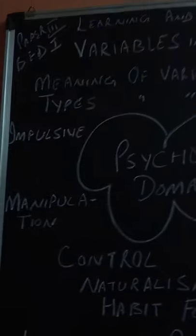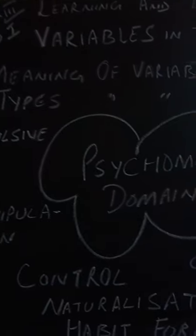Today I am going to discuss with you learning and teaching — that is Paper 3 for B.Ed first year. In this I am going to discuss variables in the teaching process, called 'shikshan prakriya ke char.' Variables are where children can change their behavior and gain new knowledge.